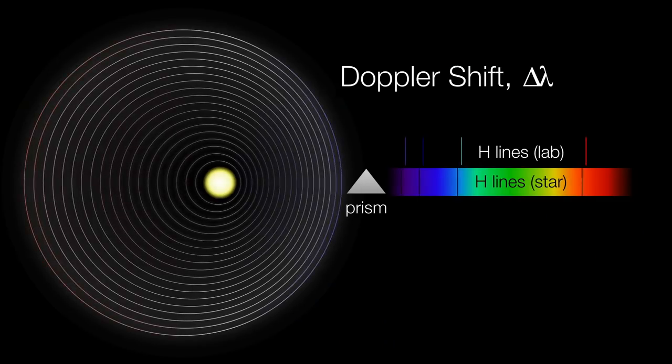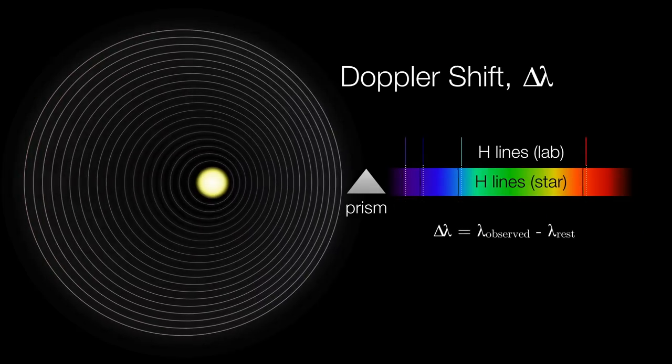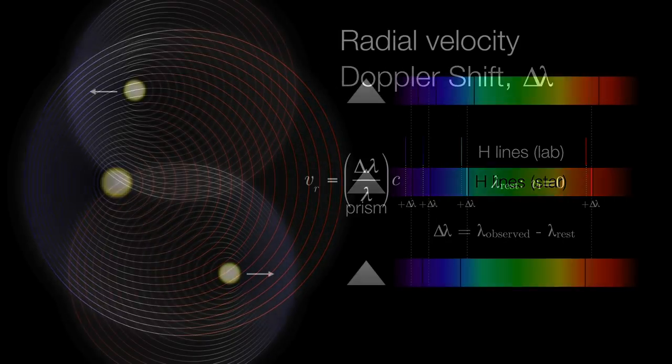Measuring a cluster's radial velocity is relatively easy. All you do is measure the Doppler shift of their spectra. The amount and direction of the Doppler shift reveals how fast the cluster is moving toward or away from Earth.